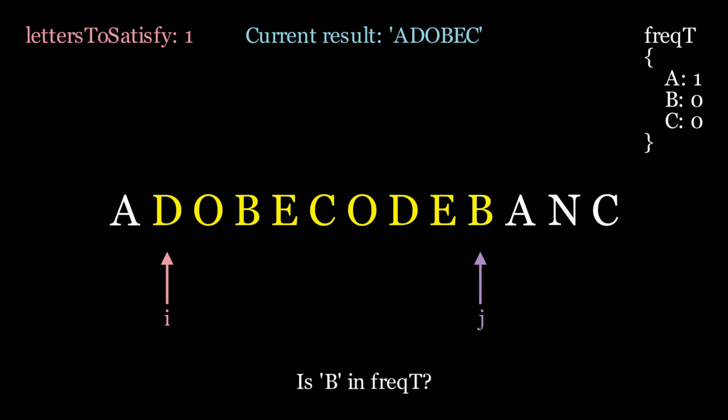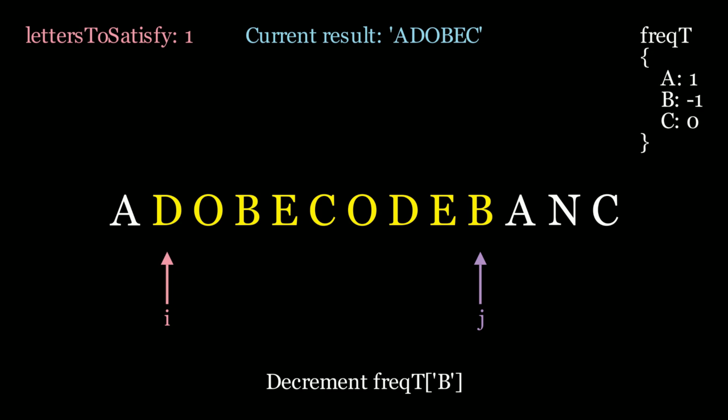Here's where it gets interesting. We scan a b — b is in the frequency table. So we decrement the value of b from 0 to negative 1. That means our substring has an extra b than we actually need. But should we update letters to satisfy? No — we only update letters to satisfy when we hit 0. If we go negative, that just means we have an excess of a letter that's already satisfied. That's fine; it doesn't hurt us, but it also doesn't help us. We still need to satisfy the letter a even though we have an extra b.